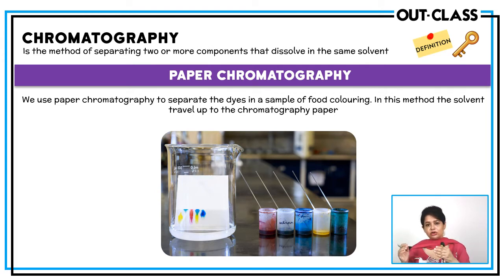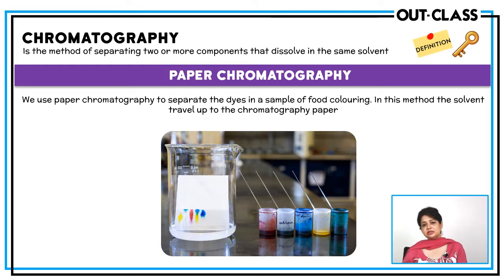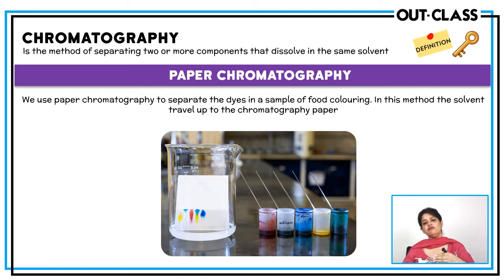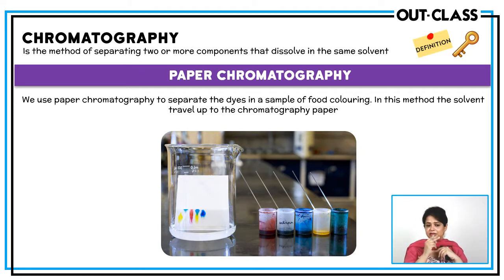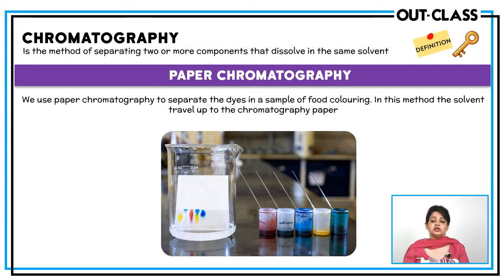This method is based on the difference in solubilities, just as fractional distillation is based on the difference in boiling points of liquids. Chromatography is based on the difference in solubilities of solids in the same solvent. Solids which are more soluble will rise to a greater height with the solvent; solids which are less soluble will lag behind. Due to this difference, each solid can be separated, and it is a very sensitive technique — it can detect even the minutest amount of solid.